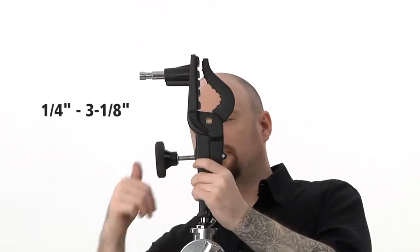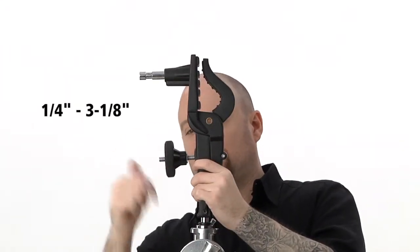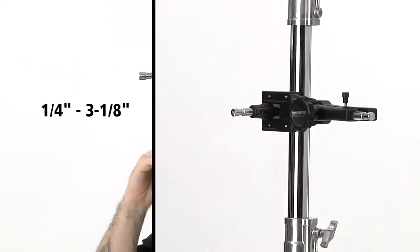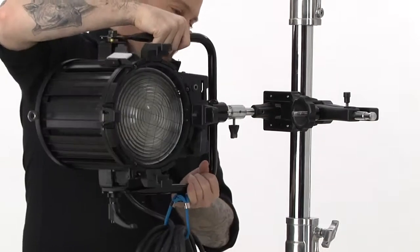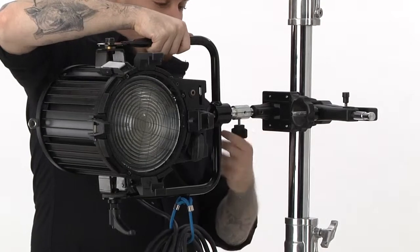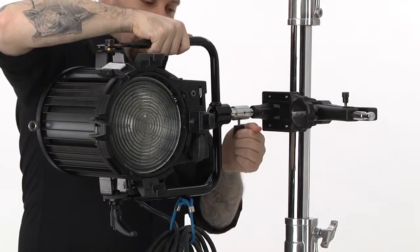The jaws of the Large Gaffer Grip can be adjusted from ¼ inch to 3 1⁄8 inches. The first mounting location has a fixed baby ¼ inch or 16mm pin attached to the flat part of the jaw.